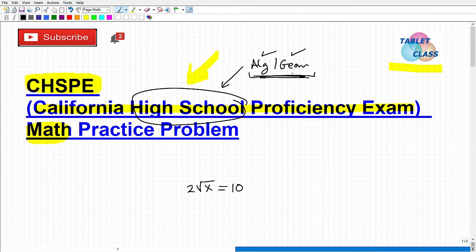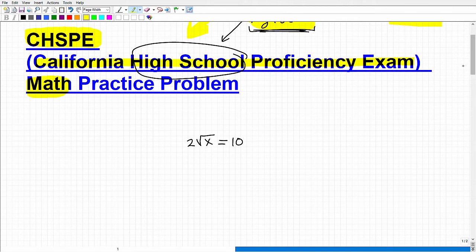But the CHSPE isn't going to be testing you on that advanced math. Really, this is going to be like the main foundational math that is going to be probably the main chunk of the exam. So you really need to be strong in algebra and geometry. And this problem here is a real basic algebra problem.